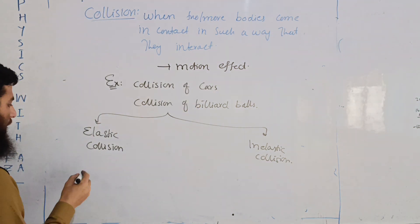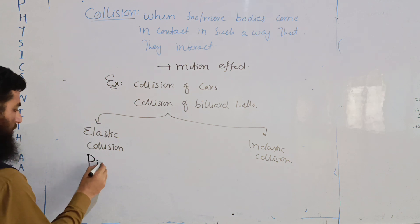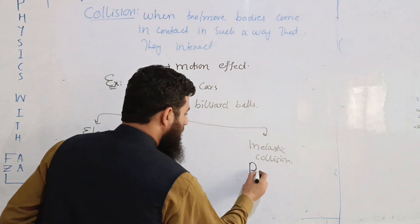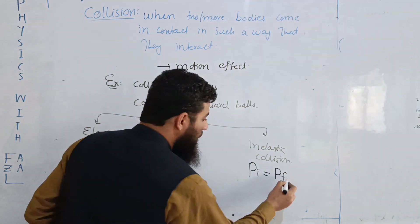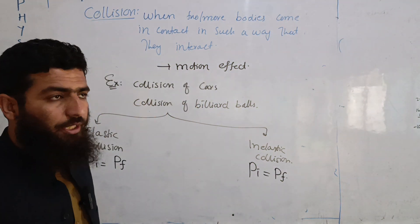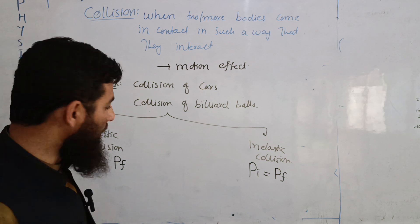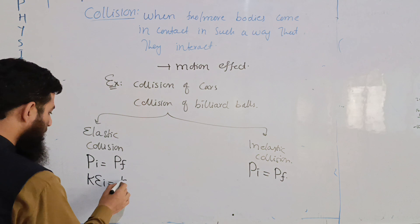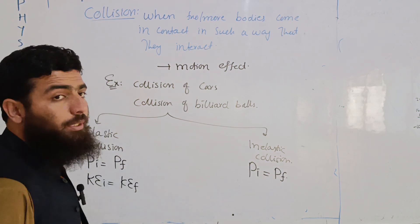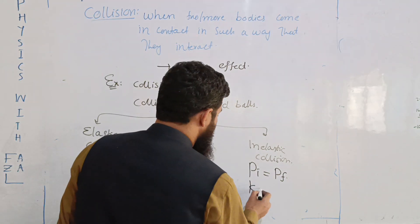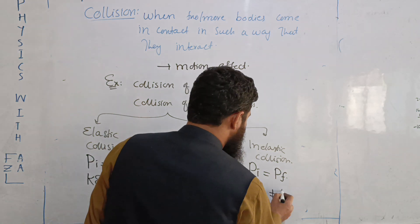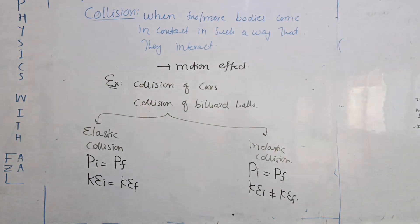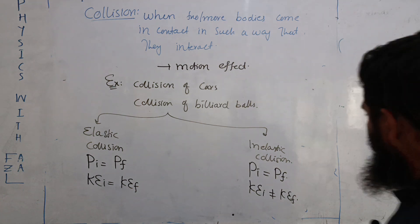In elastic collision, the initial momentum equals the final momentum. The kinetic energy initial and kinetic energy final are also equal. The difference between elastic and inelastic collision is that in inelastic collision, the initial and final kinetic energies are different.